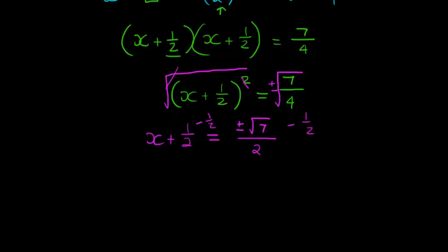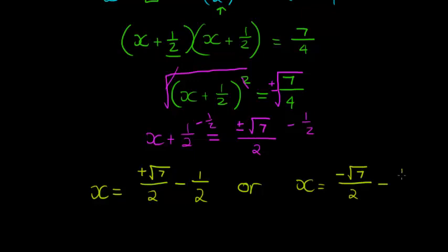Subtract a half on both sides, so that now I have x is either equal to plus square root of 7 over 2 minus a half, or x is equal to minus square root of 7 over 2 minus a half. And when I do this using my calculator, because I don't know what the square root of 7 is, my answer is more or less, if I round it to three decimal places, 0.823, or in this case, it is negative 1.823.